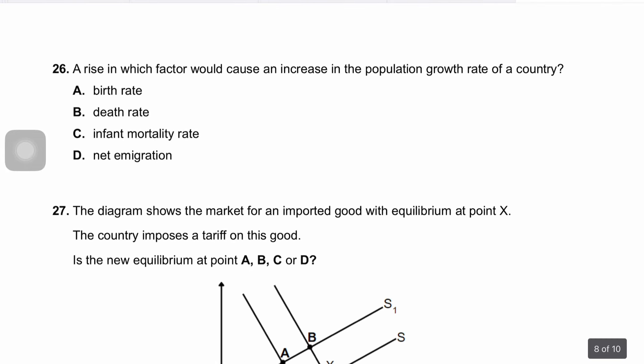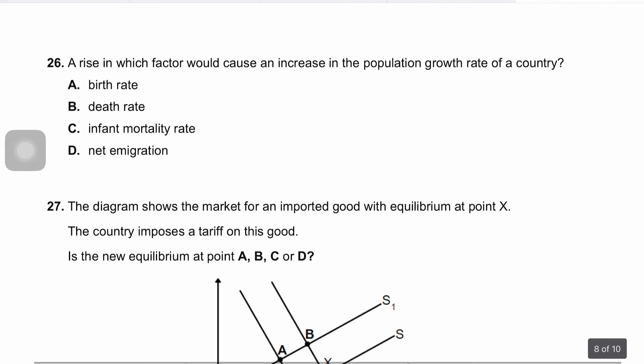Question twenty-six asks what rise in which factor would cause an increase in the population growth of a country. An increase in the birth rate will directly increase the population growth rate because more individuals are being added to the population. The correct answer is A.